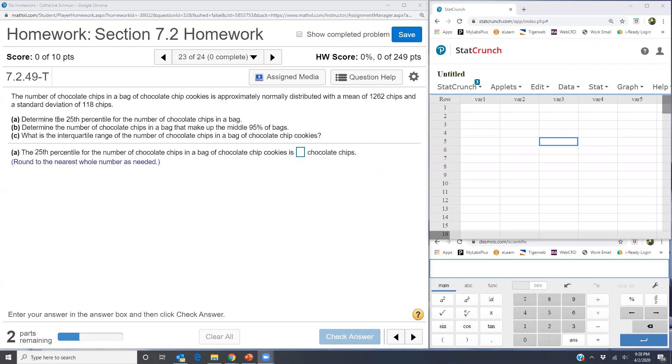Part A says determine the 25th percentile for the number of chocolate chips in a bag. Now we know that percentile means the number which has 25% of the data less than it. And when we're talking about a percent, a percent always is equivalent to an area. So that's really important in this section. Percent is area and a percentile is area to the left.